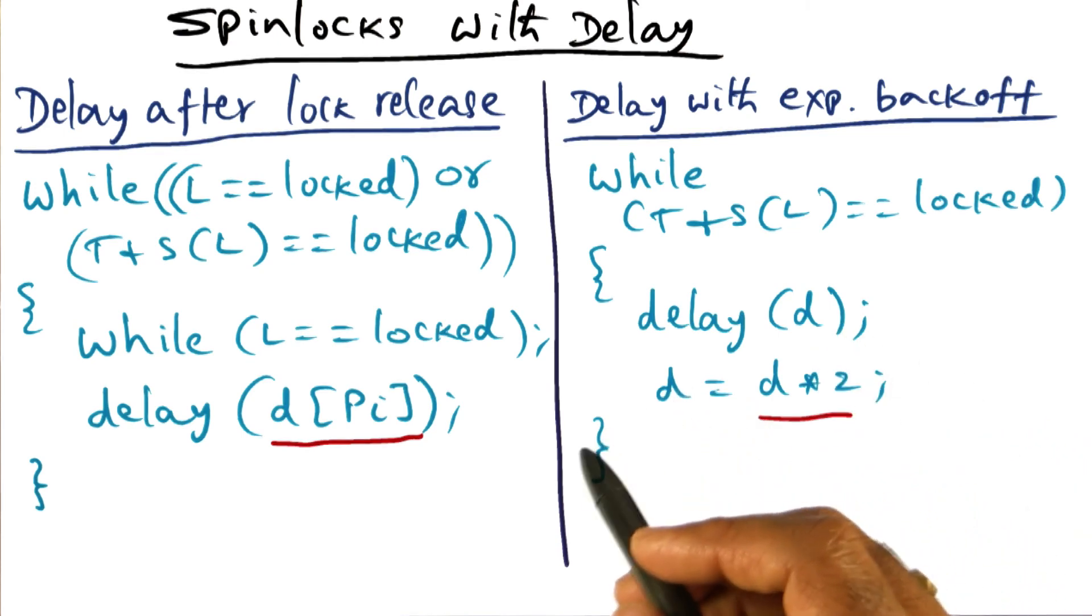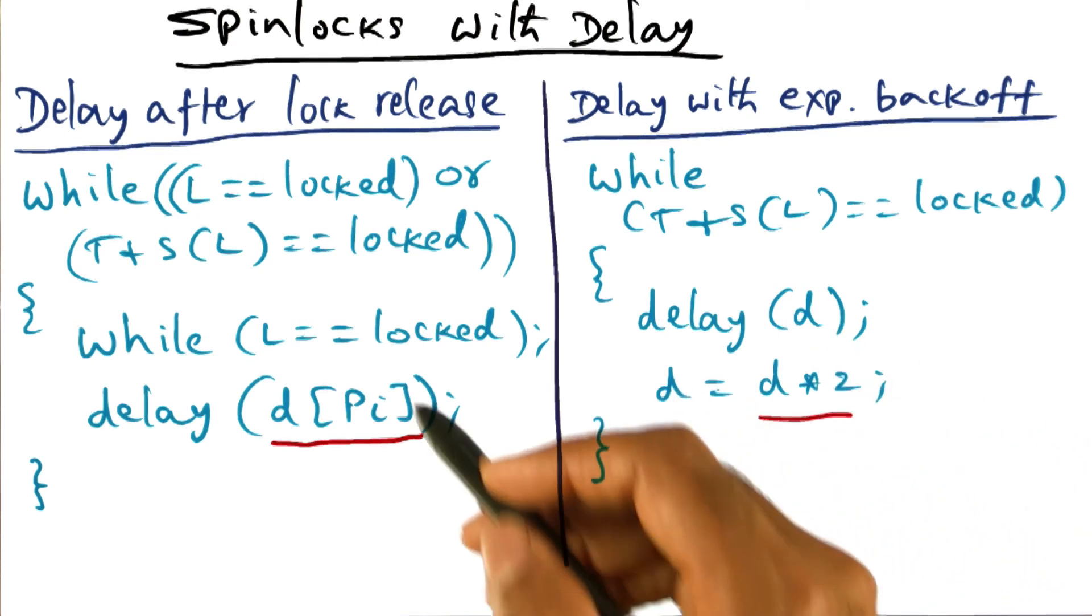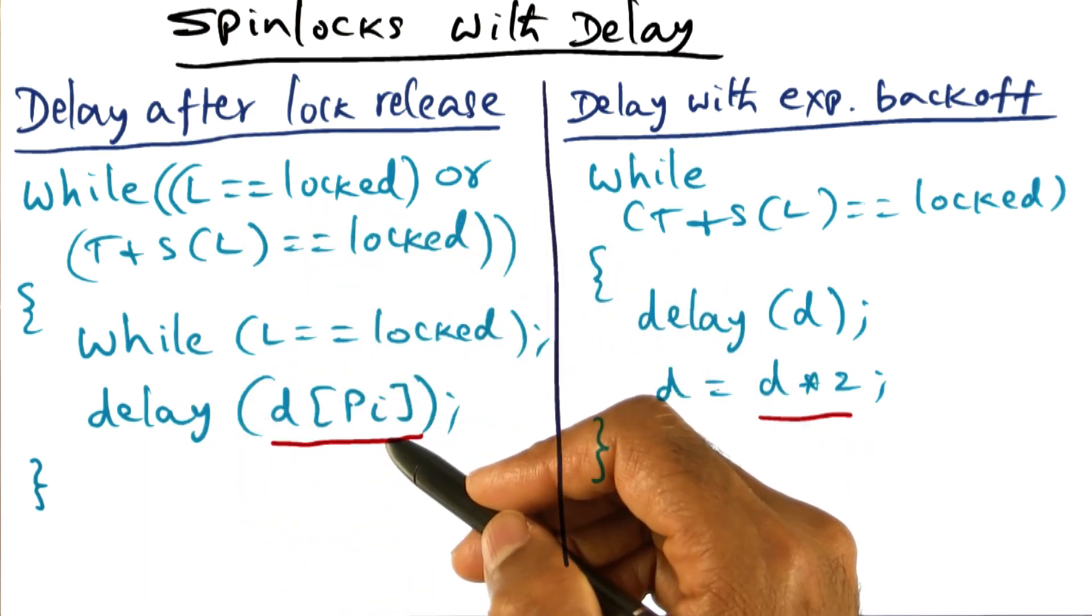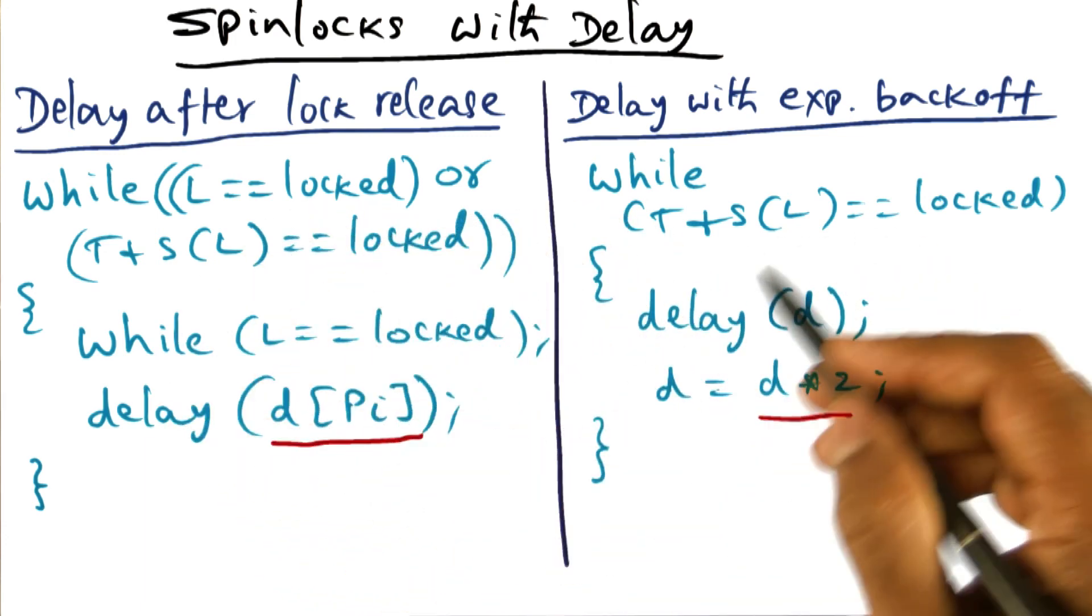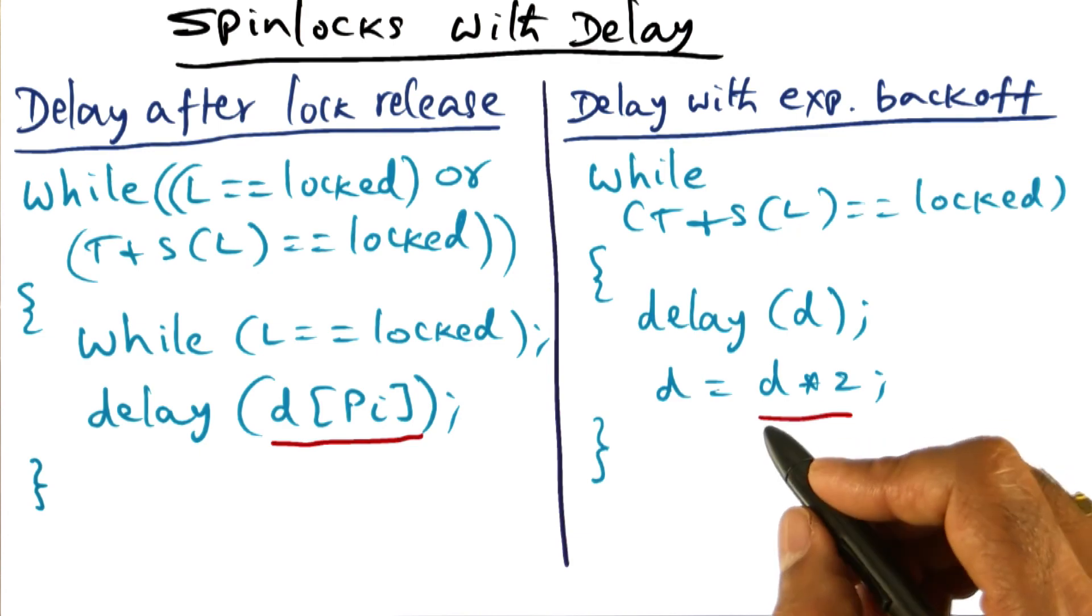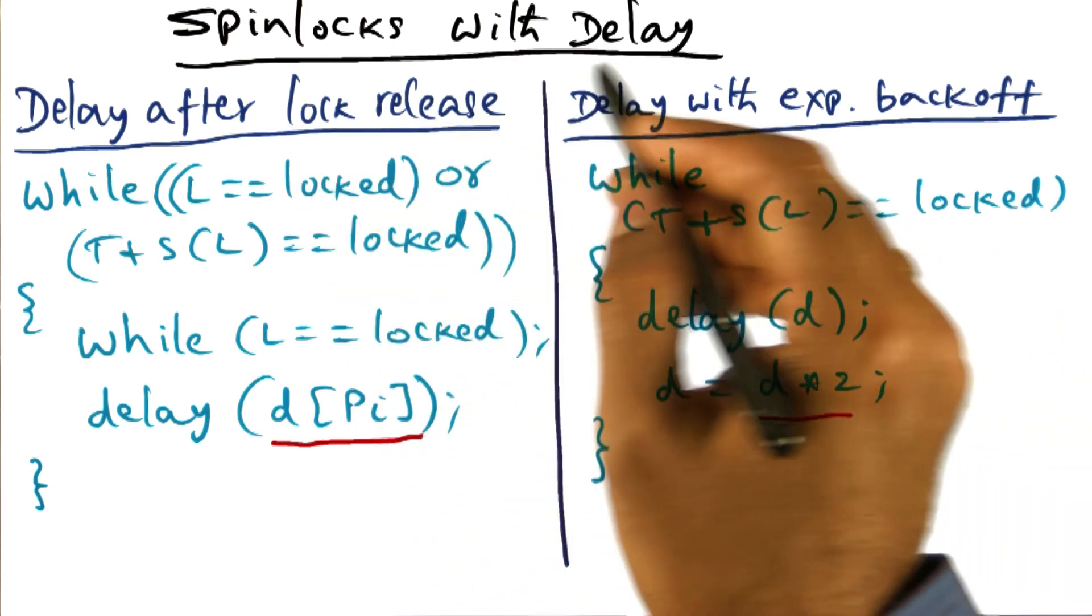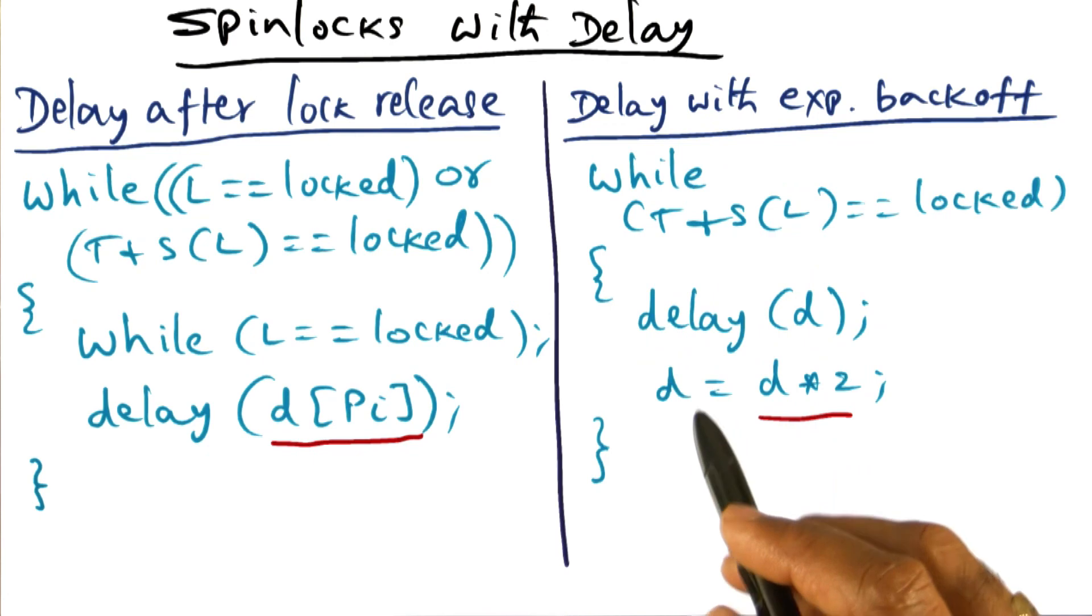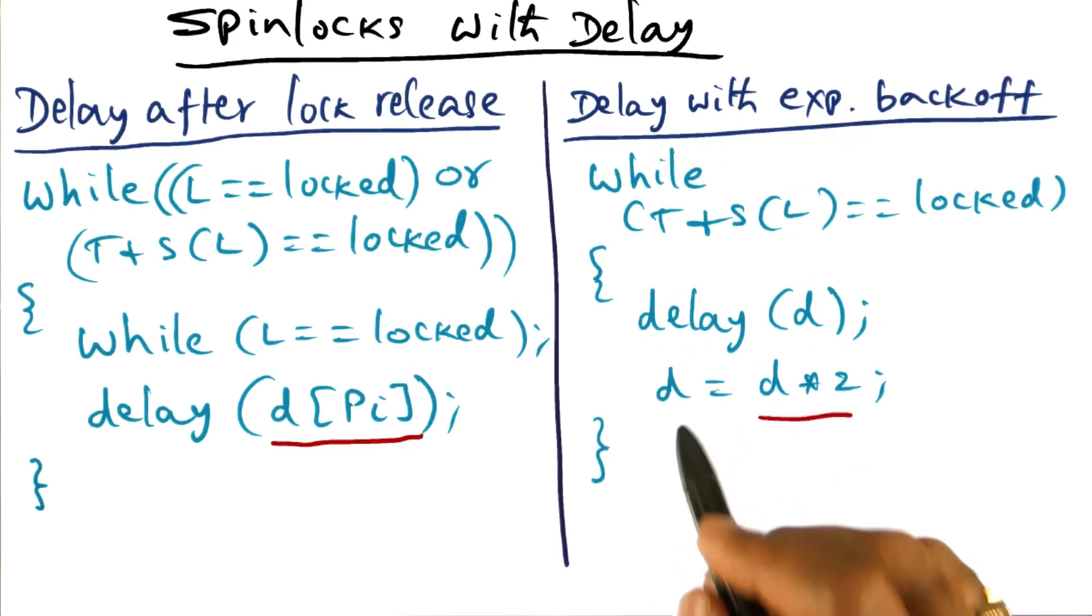Generally speaking, if there's a lot of contention, then static assignment of delay may be better than the dynamic exponential backoff. But in general, any kind of delay, any kind of procrastination will help a lock algorithm better than the naive spinlock that we talked about.